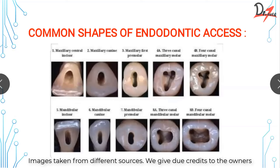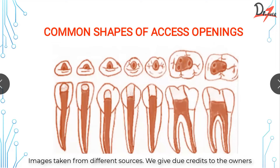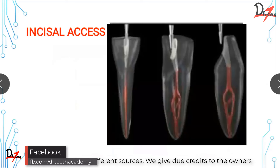Each tooth is individually different and we've all learned about the shapes of endodontic access cavities. For a maxillary central incisor it's a rounded triangle — the base at the incisal edge and the apex at the cingulum area. For maxillary canines it's somewhat oval in shape. For premolars it's slightly more oval and flatter. For maxillary molars it's trapezoidal or rhomboidal, and for mandibular molars it's more rectangular. These shapes are based on the shape of the pulp chamber — we follow the natural anatomy.